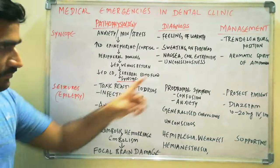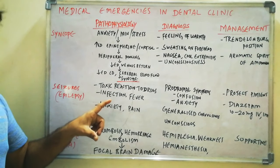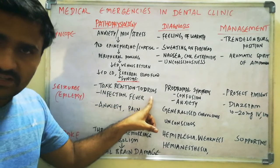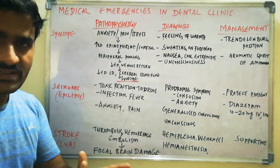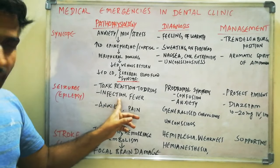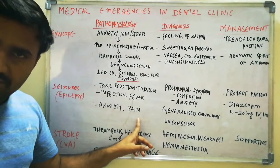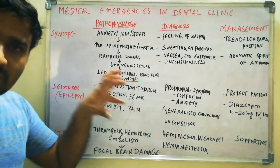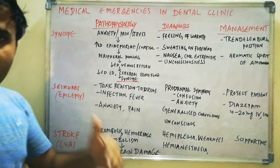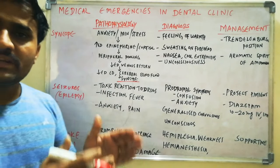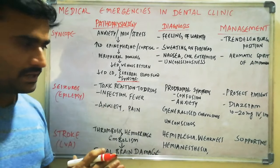After syncope, we have seizures, that is epilepsy. Triggering factors include toxic reactions to drugs — including local anesthetics — infection, fever, anxiety, or pain. Repeated attacks of seizures constitute status epilepticus, which is a severe form of epilepsy.